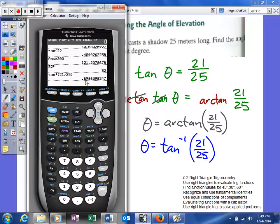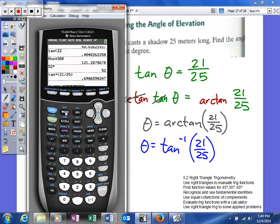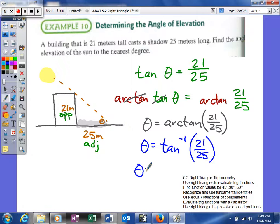It doesn't make sense for the angle to be 0.699 degrees. Always think about your answers, don't just trust the calculator. Now in the correct mode, the angle is roughly 40 degrees. That's the angle of elevation for this problem.